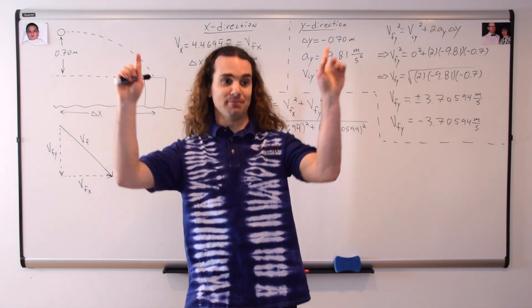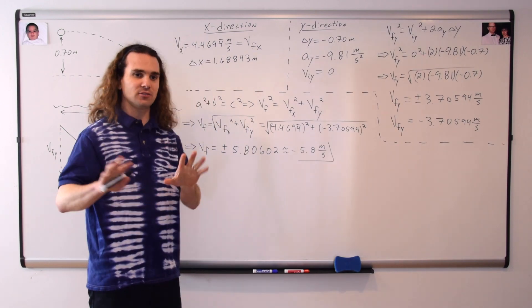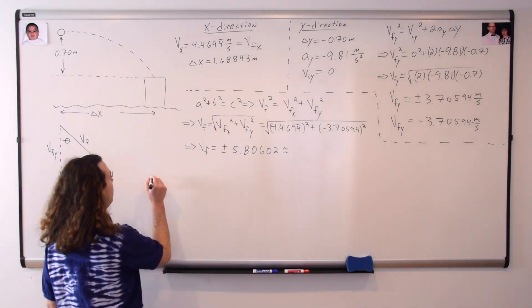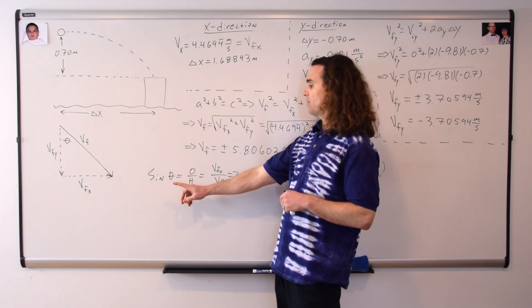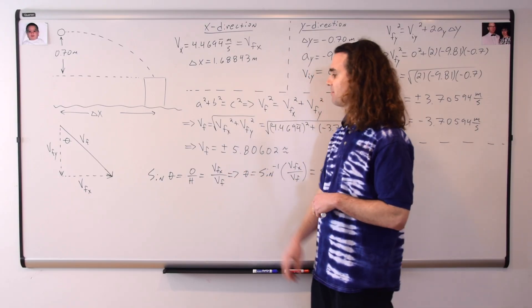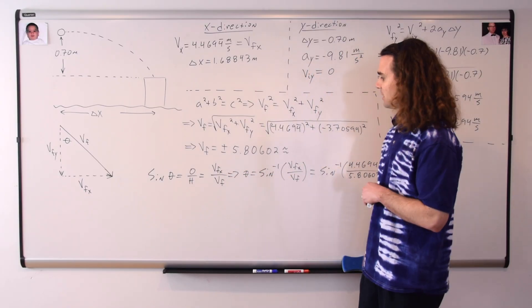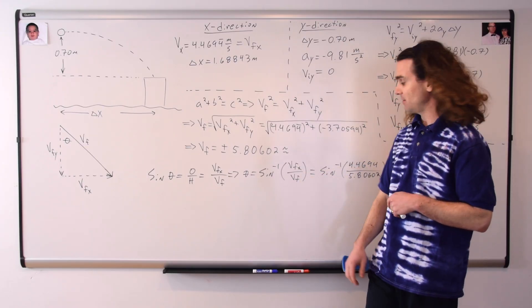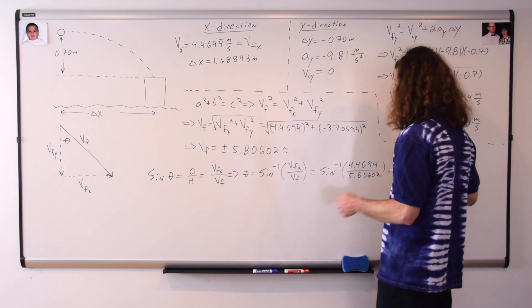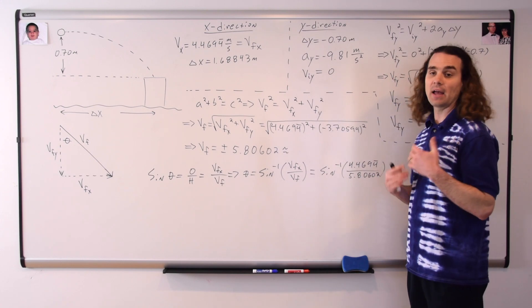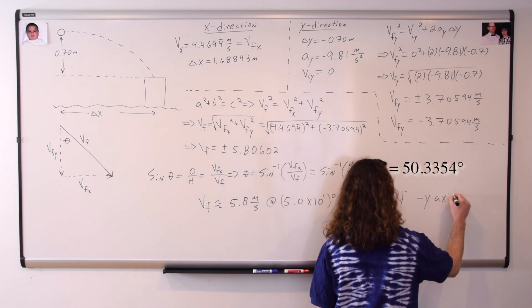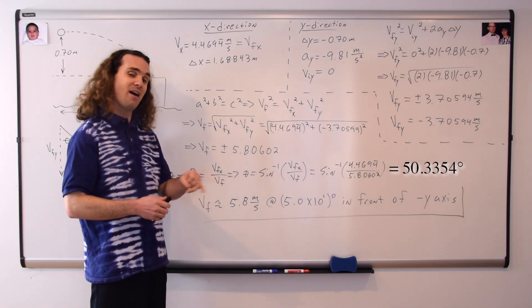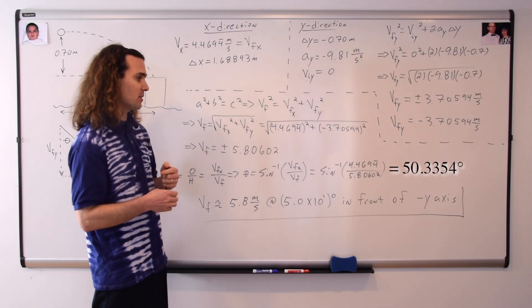Bobby, thank you — you were correct — and I'll figure out the angle. In the right triangle, the sine of the angle theta equals the opposite over the hypotenuse. Opposite our angle theta is the velocity final in the x-direction; on the hypotenuse we have the velocity final. Taking the inverse sine of both sides, theta equals the inverse sine of velocity final x divided by velocity final. With numbers, that is the inverse sine of 4.4694 repeating divided by 5.80602, which gives 50.3354 degrees. Therefore, with two significant digits, the final velocity is 5.8 meters per second at an angle of 50 degrees in front of the negative y-axis.